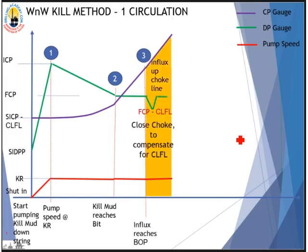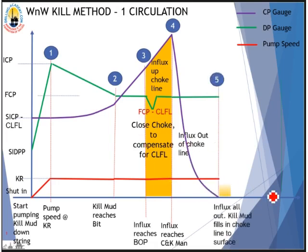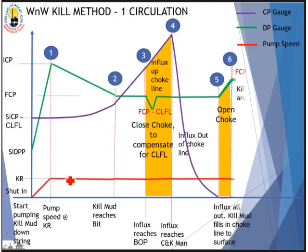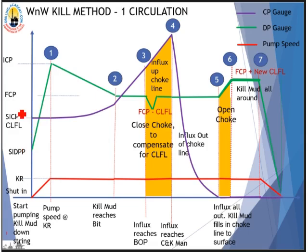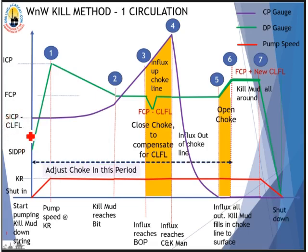These graphs show how pressure progresses on the drillpipe pressure gauge and casing pressure gauge. The drillpipe pressure gauge is the green line, the casing pressure gauge is the purple line, and the pump speed is in the red graph. We pump the kill mud down the string to bring the pump up to kill rate. Casing pressure is held constant and certain casing pressure deducting choke line friction loss. Drillpipe pressure is expected to increase from the initial drillpipe pressure up to Initial Circulating Pressure (ICP). Then we continue pumping at the same kill rate, controlling the choke to allow drillpipe pressure to drop from ICP to Final Circulating Pressure (FCP) when the kill mud reaches the bit.